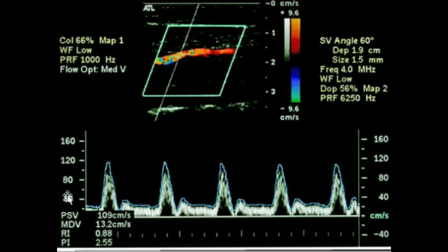The distribution of velocities within the sample volume is illustrated by the brightness of the spectral display. This may be accepted as the Z-axis. The Z-axis concept may be clear from the following image.